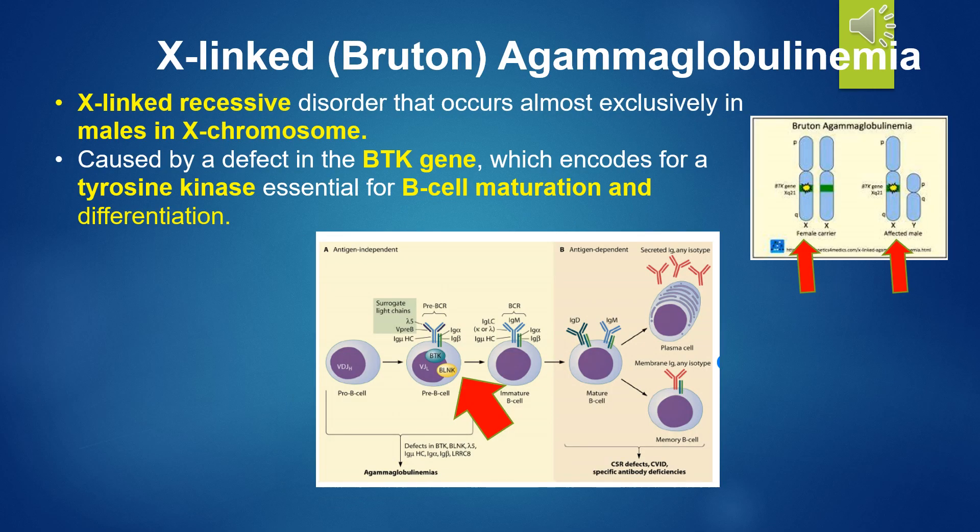X-linked Bruton agammaglobulinemia is an X-linked recessive disorder that occurs almost exclusively in males on the X chromosome. It is caused by a defect in the BTK gene, which encodes for a tyrosine kinase essential for B-cell maturation and differentiation.